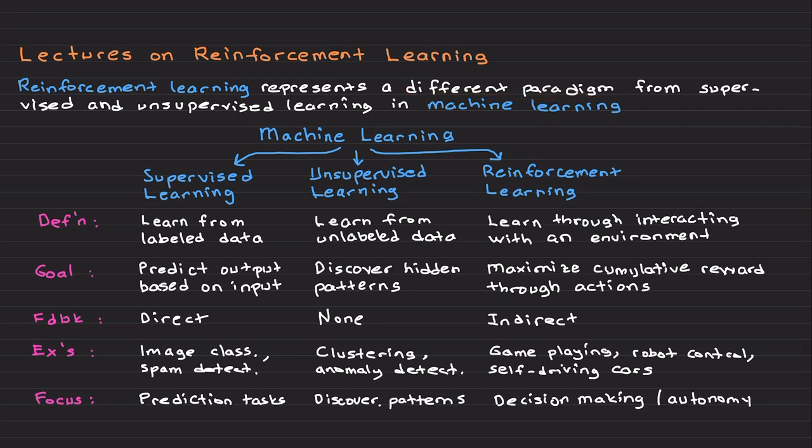Reinforcement learning represents a different paradigm from both supervised and unsupervised learning. It is unique in that it requires an agent to learn from direct interaction with an environment rather than from a static dataset. This characteristic makes reinforcement learning suitable for real-world applications such as robotics and self-driving cars that require continuous adaptation.